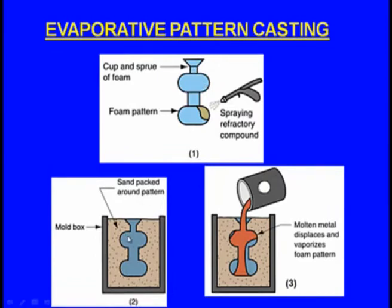This foam pattern is kept inside a molding box — only one single molding box, no cope, no drag, only one molding box. The sand is packed around this pattern. Remember, around the pattern we have already made a moderately thick shell by means of a refractory slurry.